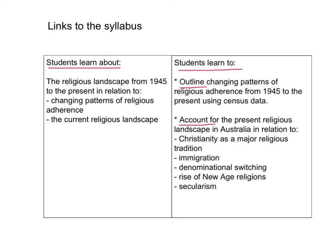So that is looking at today. In order to do that, you need to be able to outline the changing patterns of religious adherence from 1945 to the present using census data. Secondly, you will need to account for the present religious landscape in Australia in relation to five things: one, Christianity as a major religious tradition; two, immigration; three, denominational switching; four, rise of new age religions; and five, secularism. These two dot points relate to one another.